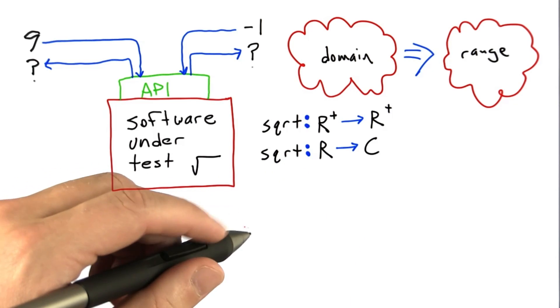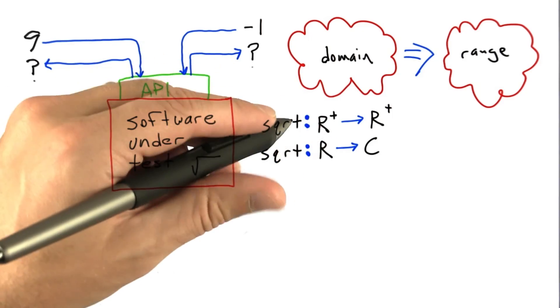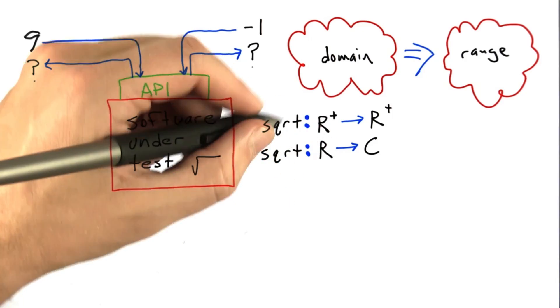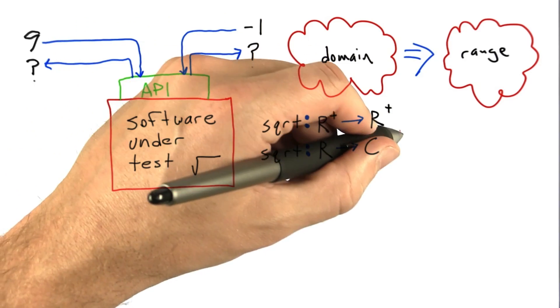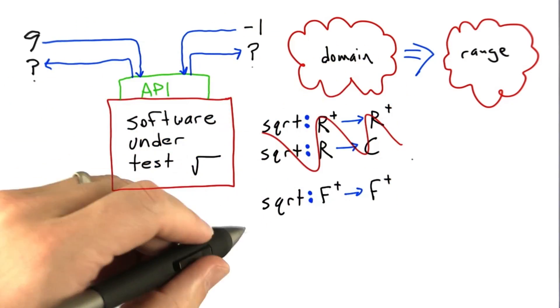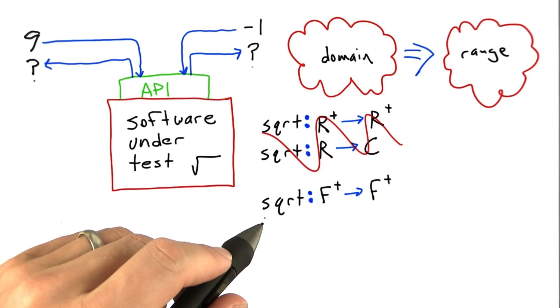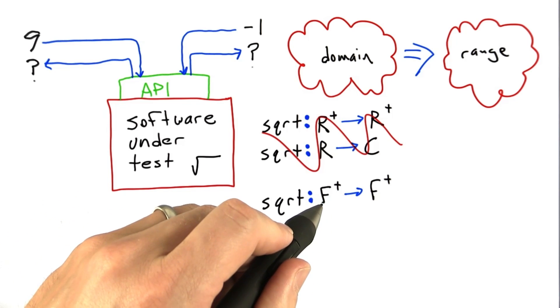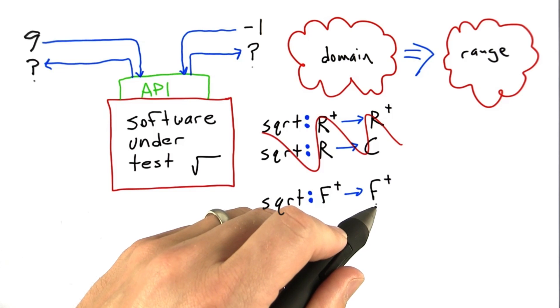Actual computer code isn't going to deal with the full set of real numbers - most real numbers aren't representable on a computer at all. Instead, we'll worry about floating point numbers. For example, we might make square root a function from non-negative floating point numbers to non-negative floating point numbers.